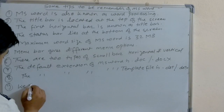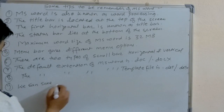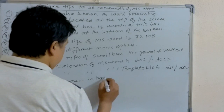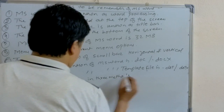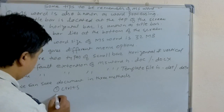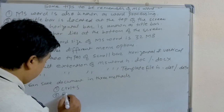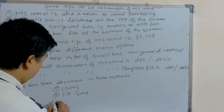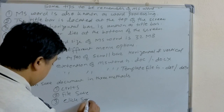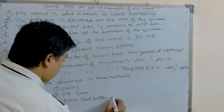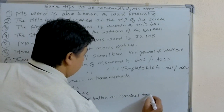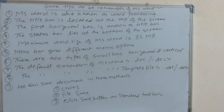We can save a document in three methods. First, using the shortcut key Control+S. Second, using the file menu: File > Save. Third, by clicking the Save button on the standard toolbar.